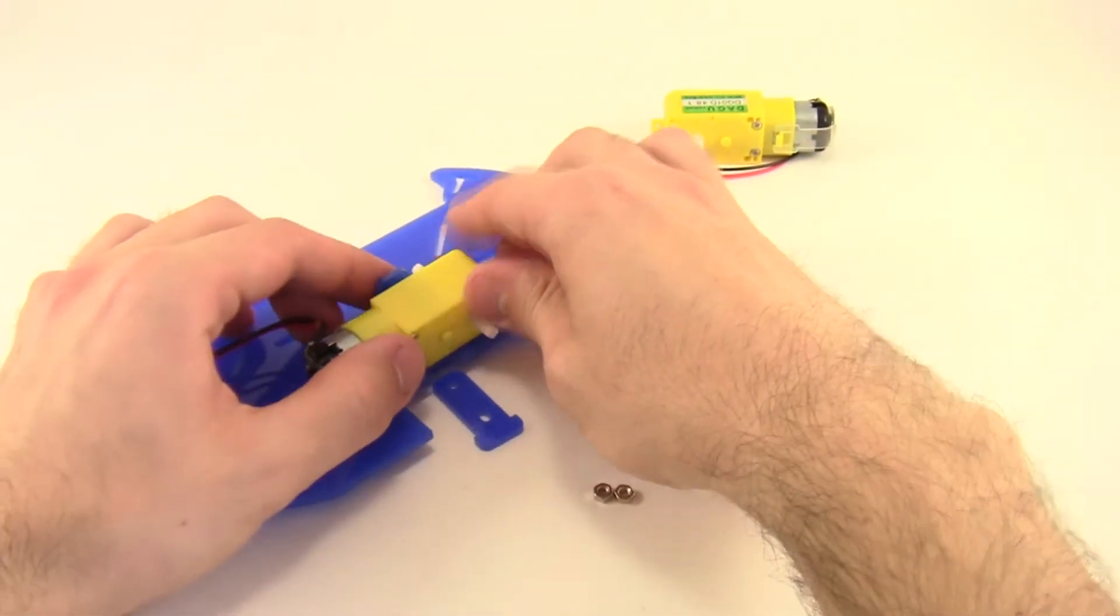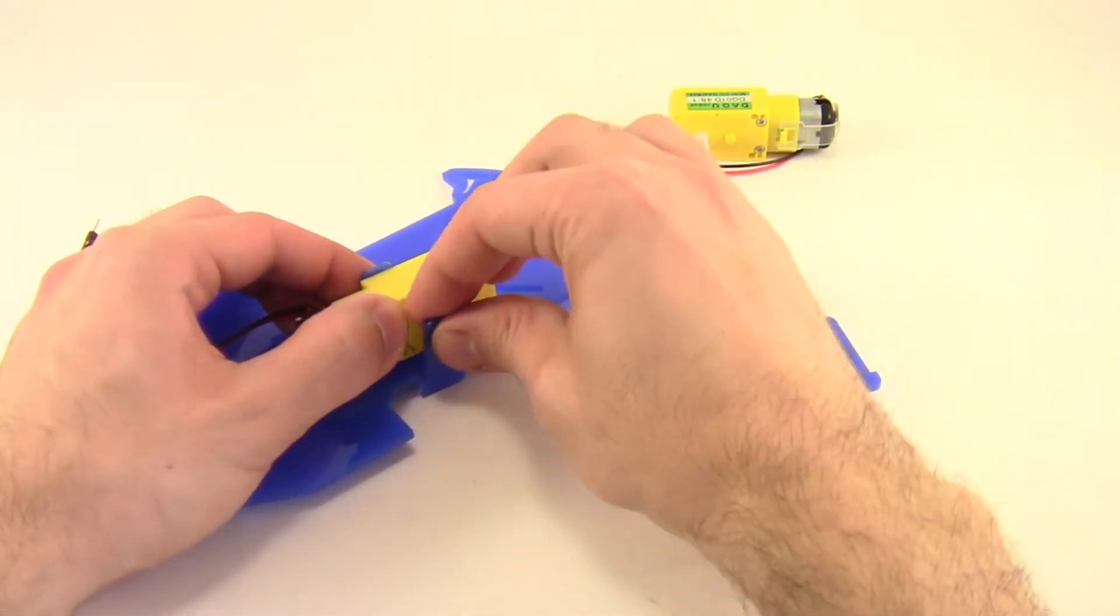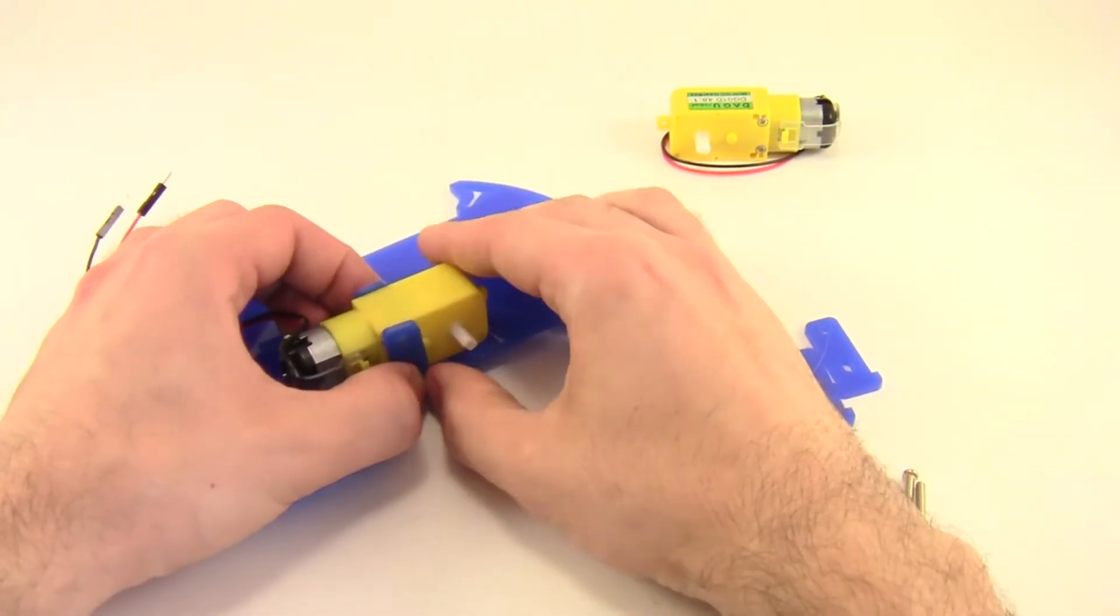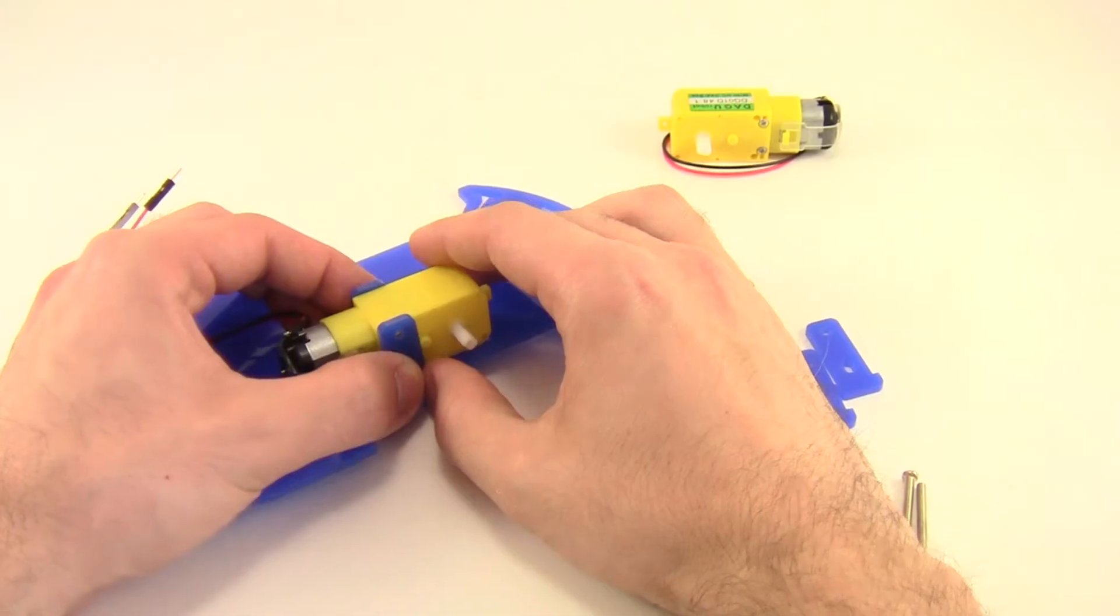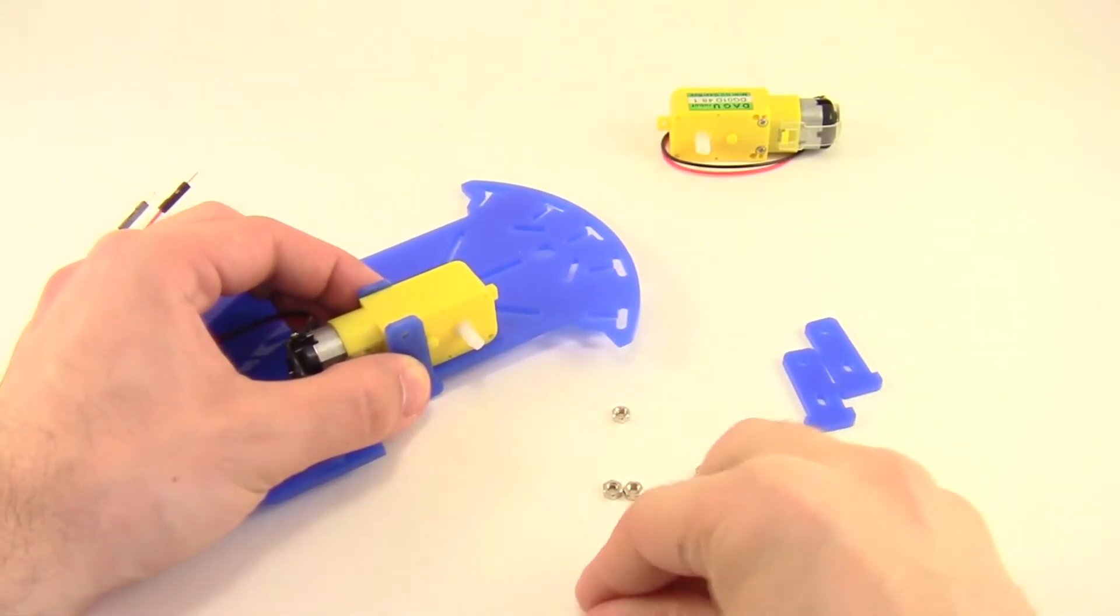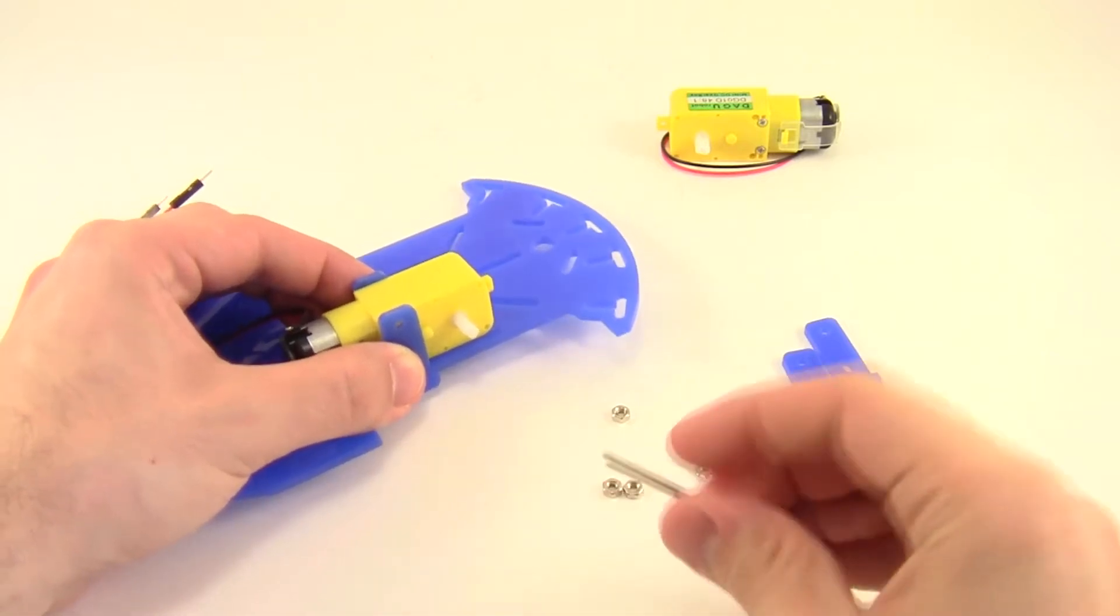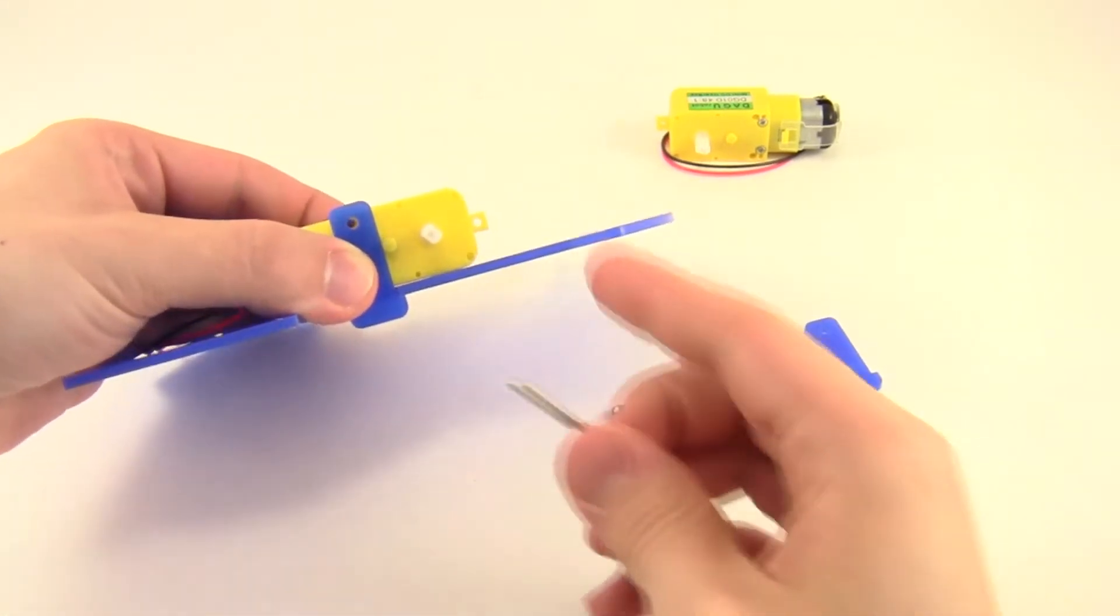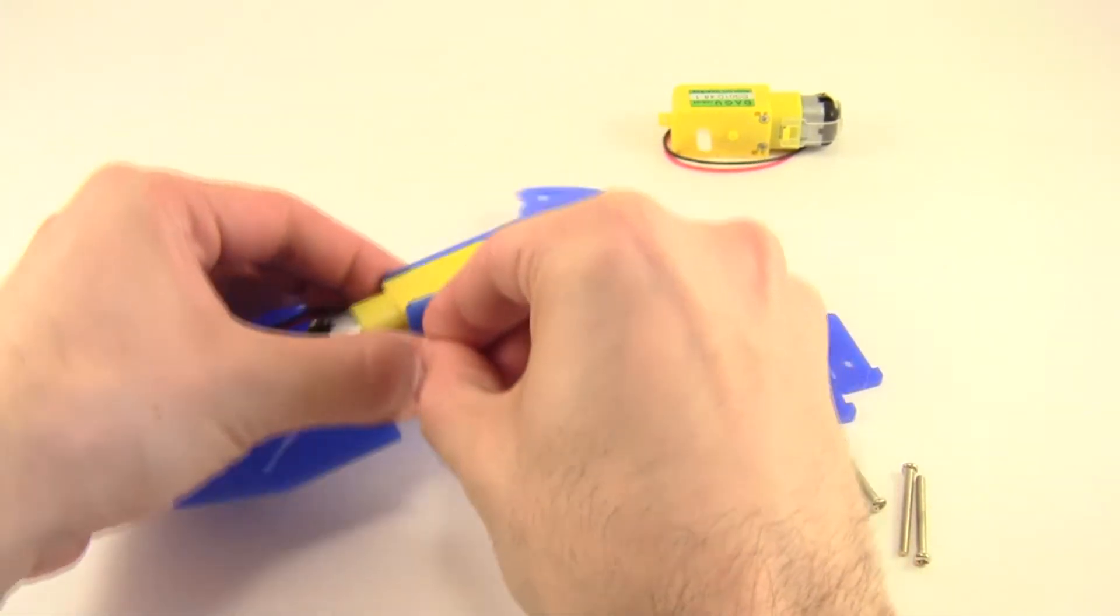So now I'm going to take the motor and pop it into place in between those two T connectors. And make sure the holes are lined up. Remember you should be able to look from one side and see all the way through to the other side of the motor through those two holes. And then you're going to take one of the long screws and get ready to push it through one of the holes.